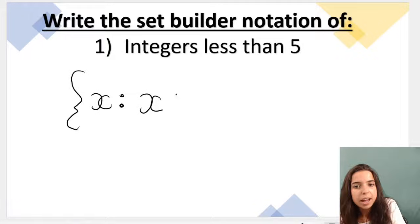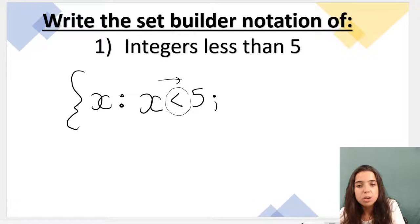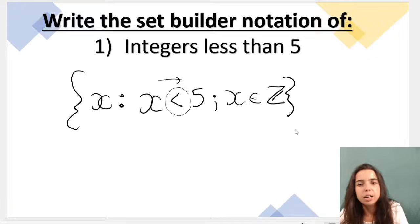So x must be less than 5. Remember, read it like this: x must be smaller than, less than 5. Do you see that in the question, it doesn't say equal to. So there's no equal sign here with the symbol. And then we do our semicolon, x is an element of integers. And we close our curly bracket.